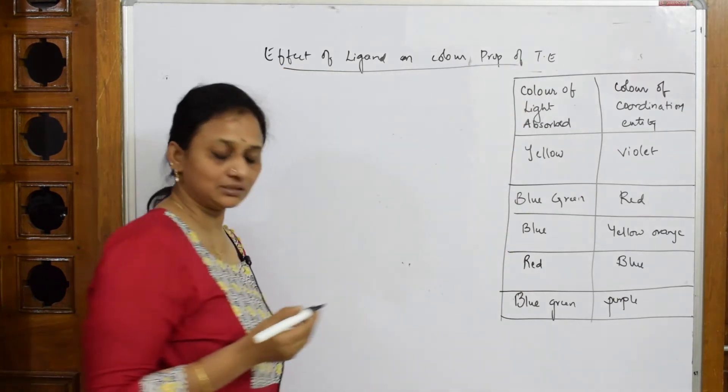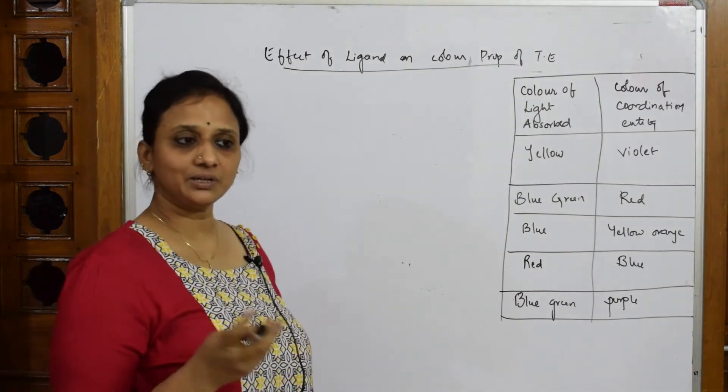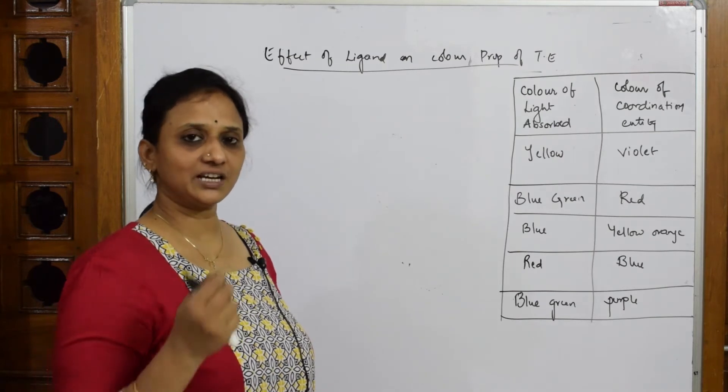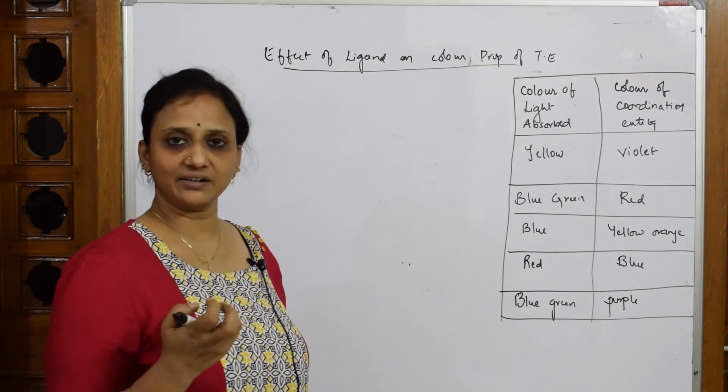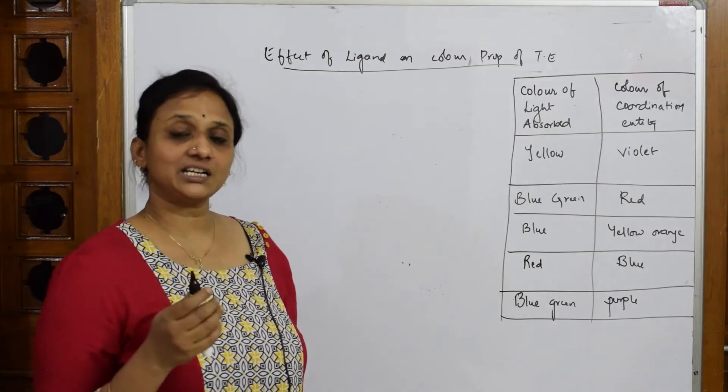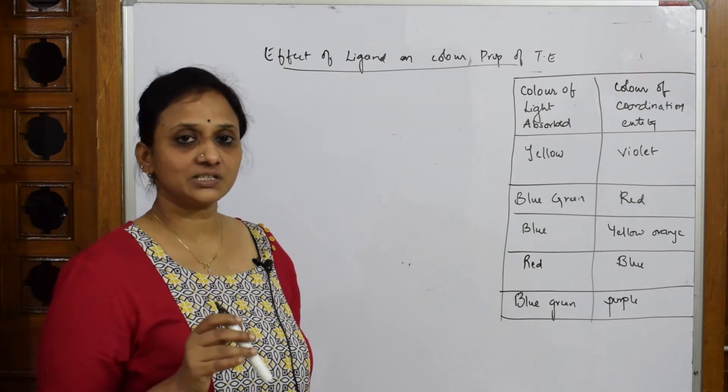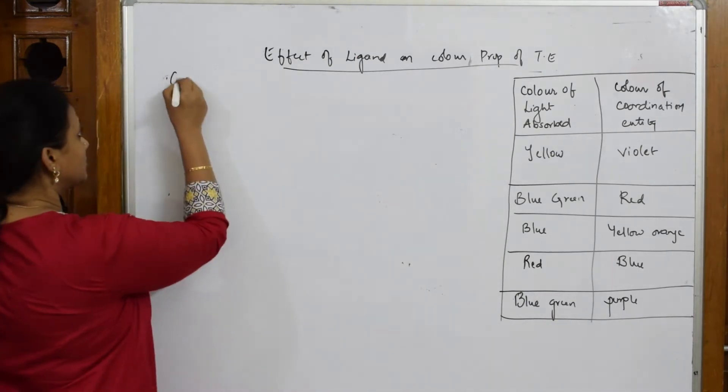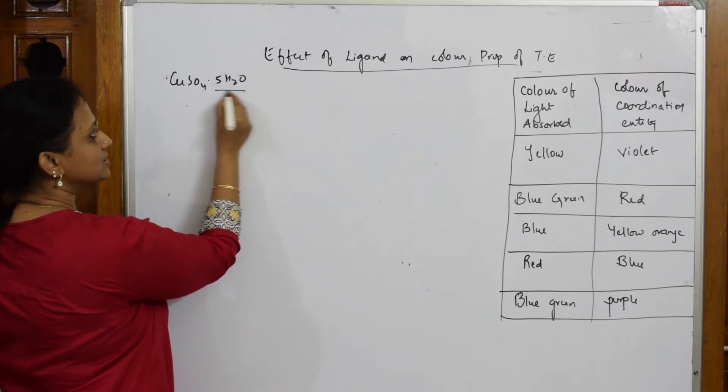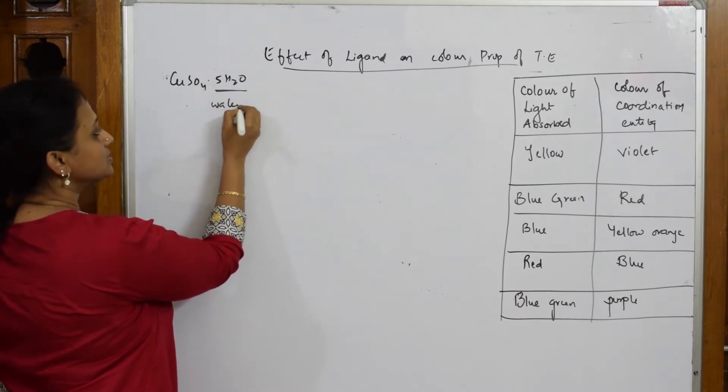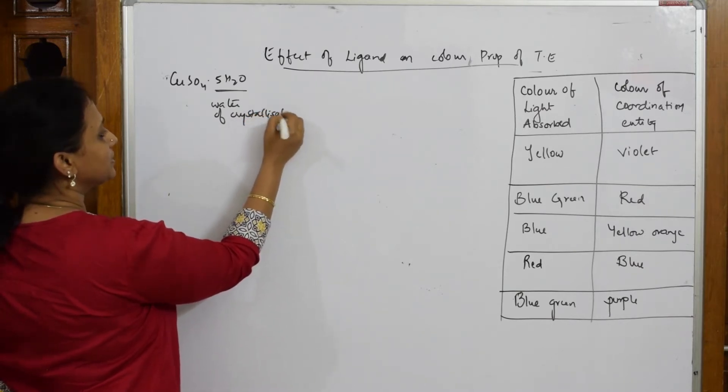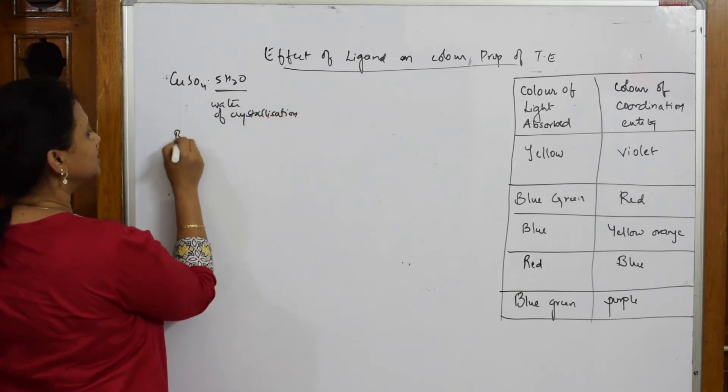You would have seen in your lab, a basic example - copper sulfate crystals. Copper sulfate crystals, when I see the pentahydrate, when I see that particular crystal in the lab, it's blue in color. This water of crystallization, because of this water of crystallization, this particular crystal is appearing blue in color.